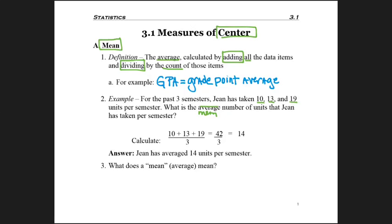So to find this, we add up the numbers in the list, the 10, the 13, and the 19, so that we get everything in the list. And we divide by three because there's one, two, three items in the list, and get a result of 14.